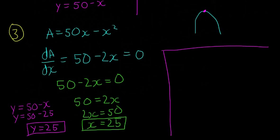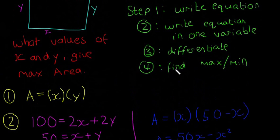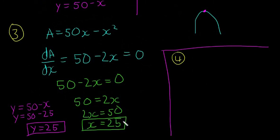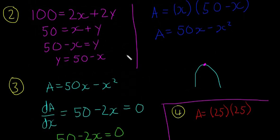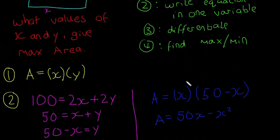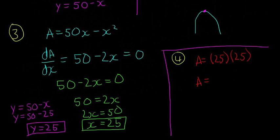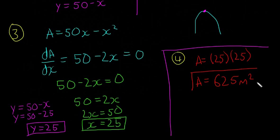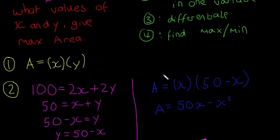Step four is to find the actual maximum area. Area equals x times y, and both x and y equal 25, so the area equals 25 times 25, which equals 625 meters squared. That's the maximum area achievable with 100 meters of fencing.